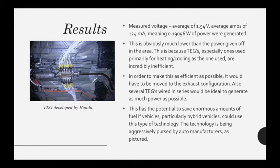This is obviously much lower than the power given off in the area. This is because TEGs, especially ones used primarily for heating and cooling as the ones used here, are incredibly inefficient. In order to make this as efficient as possible, it would have to be moved to the exhaust configuration. Additionally, several TEGs wired in series would be ideal to generate as much power as possible. This has the potential to save enormous amounts of fuel if vehicles, particularly hybrid vehicles, could use this type of technology. The technology is being aggressively pursued by automotive manufacturers, as pictured in the left slide.